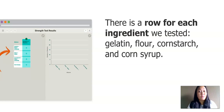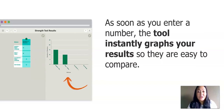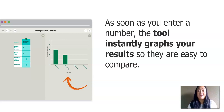There is a row for each ingredient that we tested: gelatin, flour, cornstarch, and corn syrup. When you click the plus sign next to an ingredient, a box pops up where you can enter the number of washers the ingredient could hold. And as soon as you enter the number, the tool instantly graphs your results so they are easy to compare. Remember, this graph that we are using is called a bar graph.